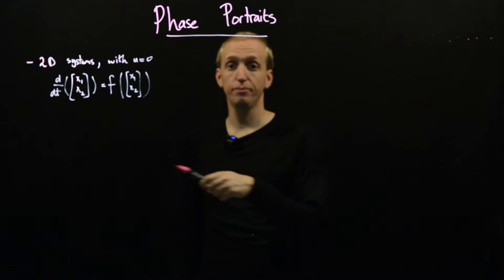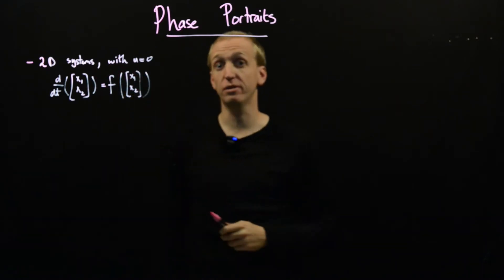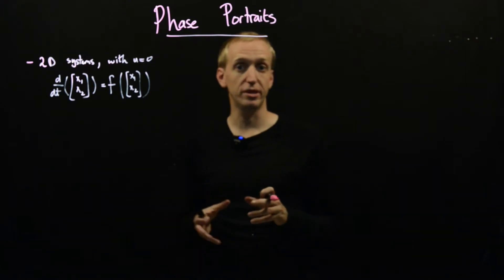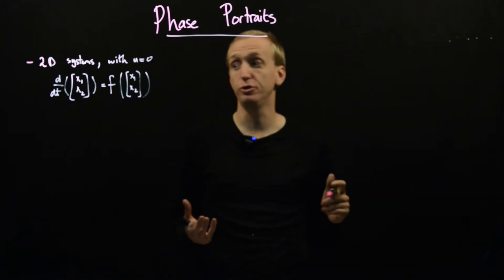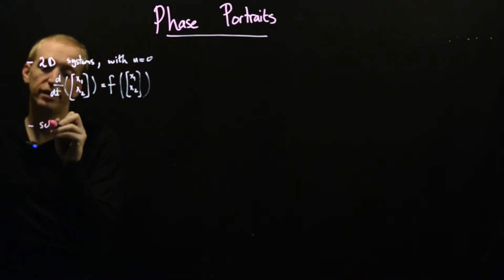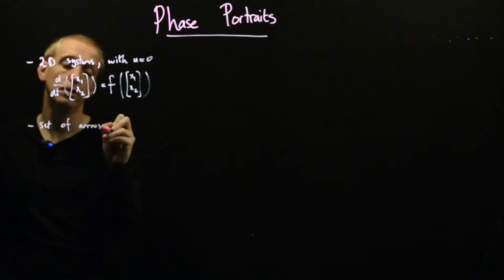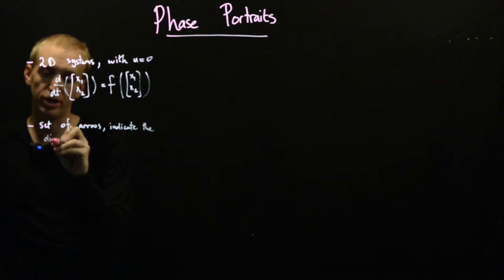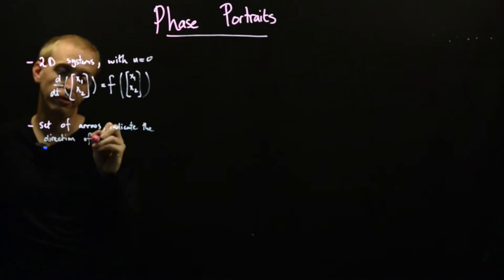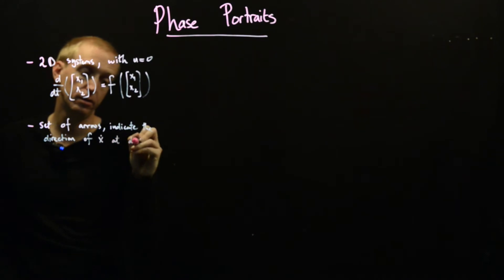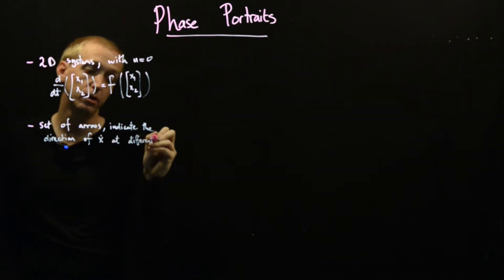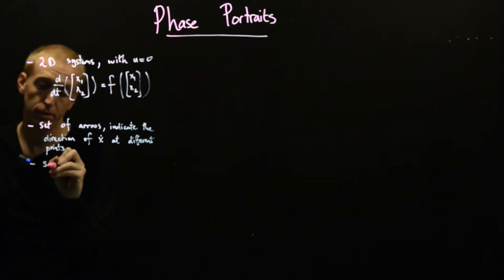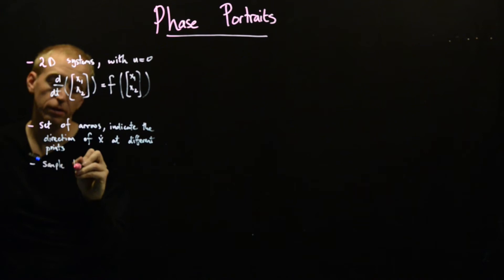And what a phase portrait will allow us to do is understand this equation in quite a convenient and visual way. So what is a phase portrait? It's a collection of arrows illustrating x dot and maybe a collection of sample trajectories. So it's a set of arrows which indicate the direction of x dot at different points and a set of sample trajectories.